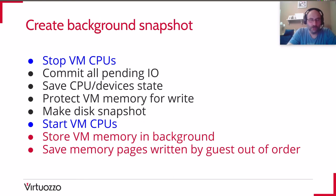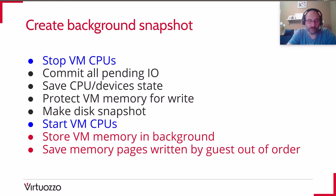What can we do? We should not just track dirty memory as in a conventional migration process, but actively protect guest memory from modification. Once a virtual CPU tries to modify the memory, QEMU will receive a notification and save that memory page before it is actually modified by the guest. Also, we should have a background thread which will save memory not touched by the guest. This is what commercial hypervisors are doing — it is conventional and well known.